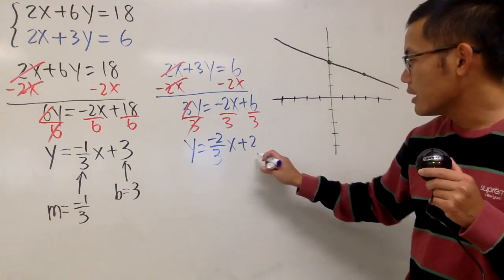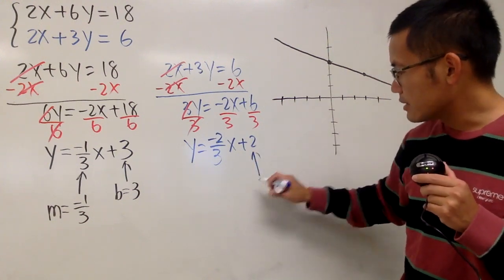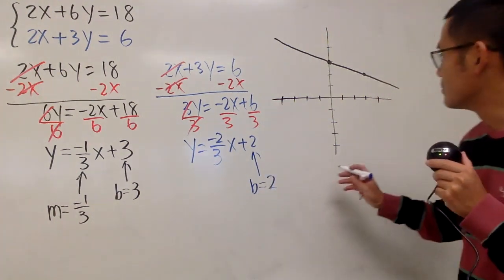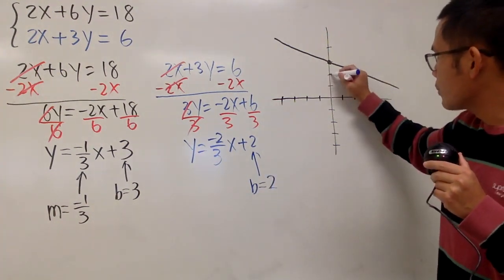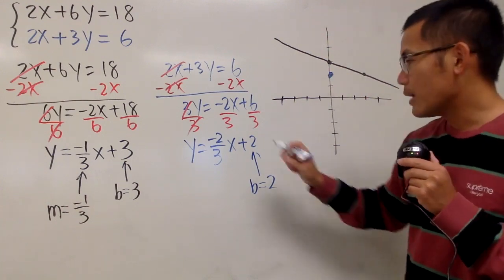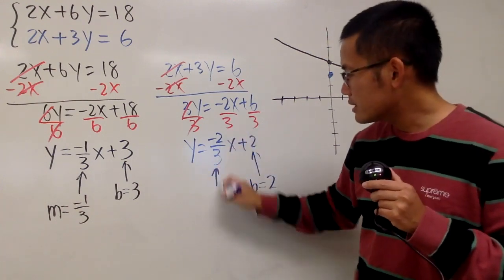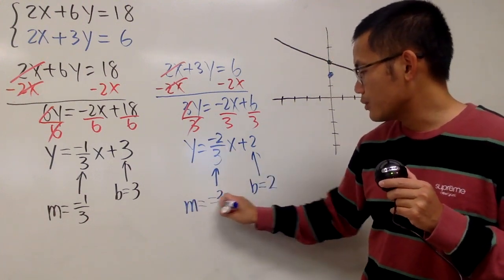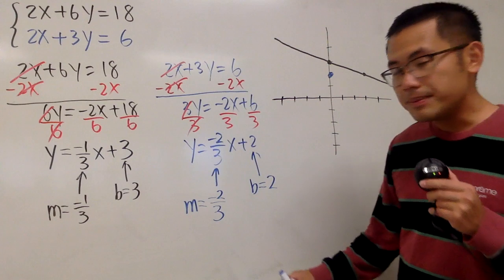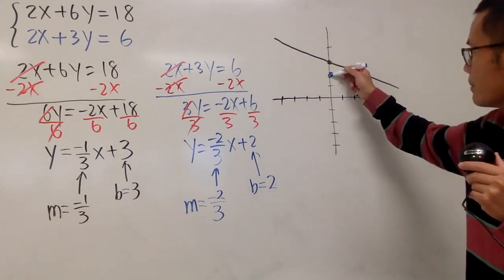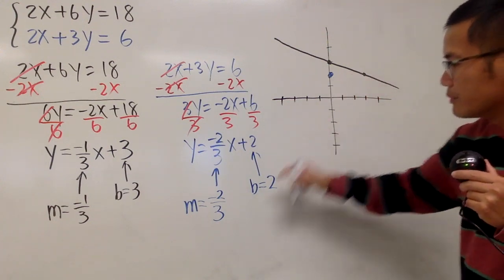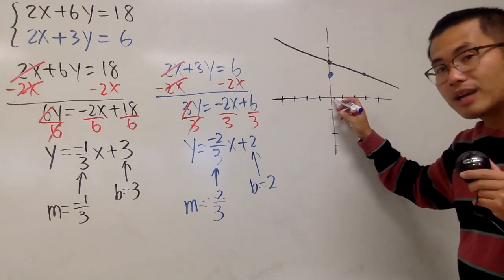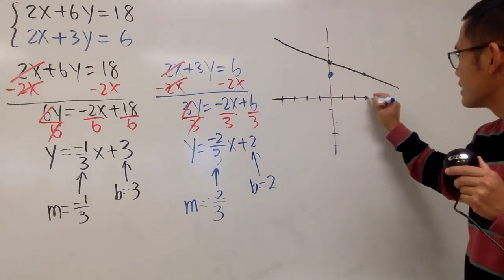Now, for this one, we are going to start on the y-axis. Here we have the b is equal to 2. So the y-intercept is 2. That means I go up 1, 2 right here on the y-axis. And then I will look at the slope, which is this. M equals, which is negative 2 over 3. This means I will have to go down from here two times and then move to the right three times. So go down 1, 2 and move to the right three times. 1, 2, 3. So it's like this.